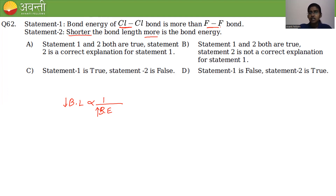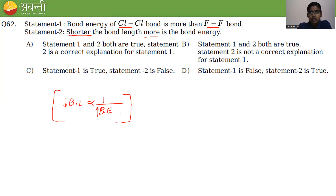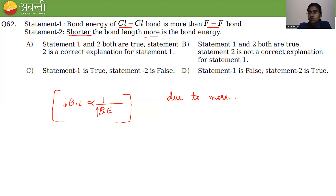Both statements are correct, but we must check whether statement 2 correctly explains statement 1. The reason Cl-Cl is stronger than F-F is due to more lone-pair/lone-pair repulsion in F₂, not simply because of bond length.